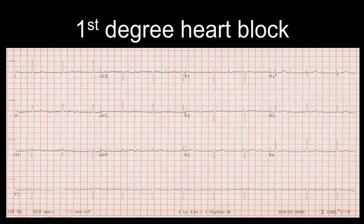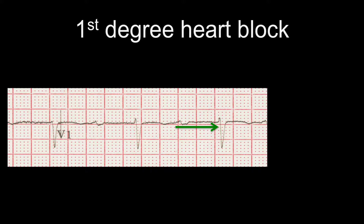This ECG shows again a narrow QRS complex with a normal axis and the heart rate is just above 60 beats per minute. When we look more closely, the PR interval is over two big squares and therefore over 400 milliseconds. Because there is one P wave for every QRS — i.e. every stimulus from the atria gets through to the ventricle — this is first degree heart block. As we have said before, this only requires treatment if the patient is symptomatic.